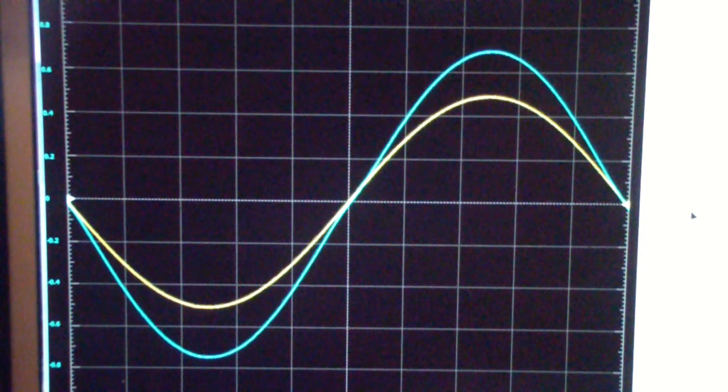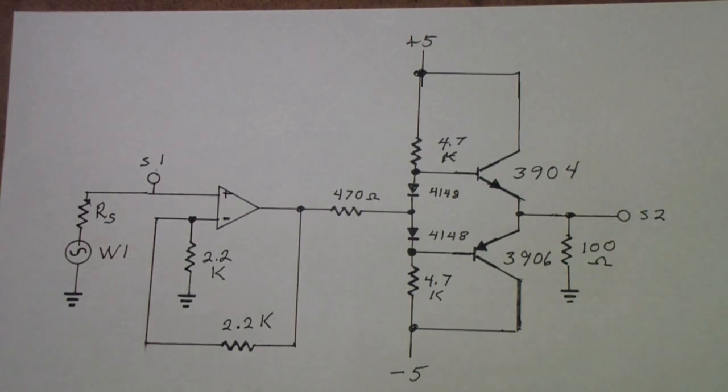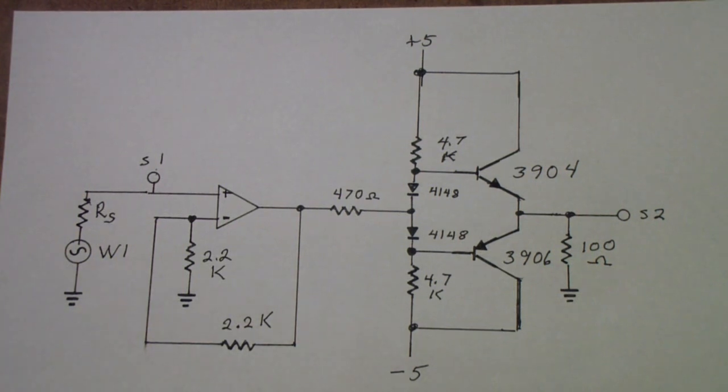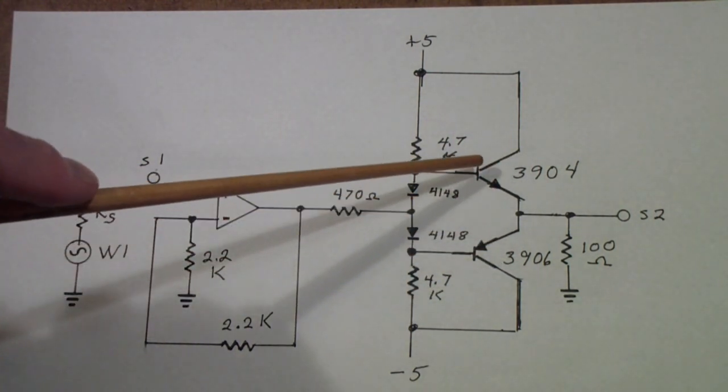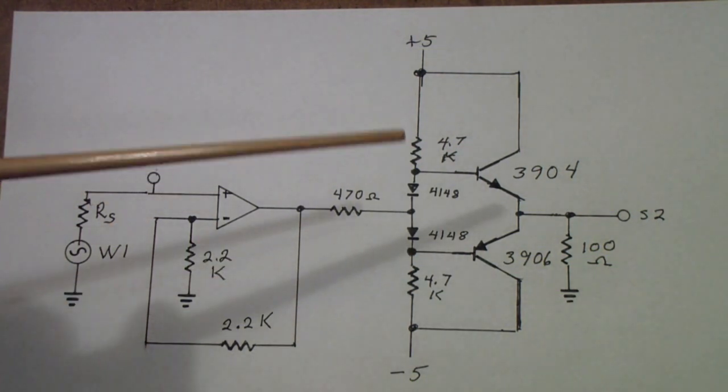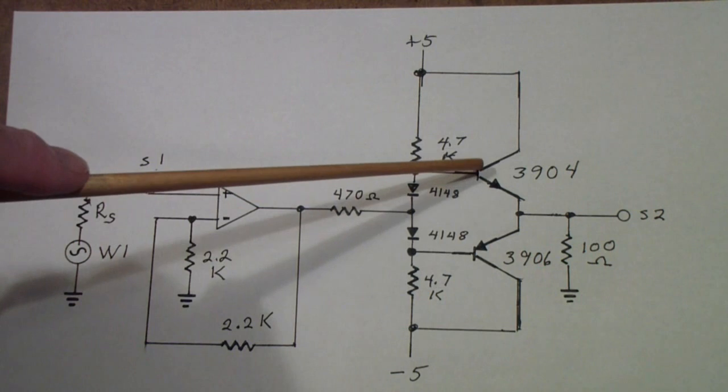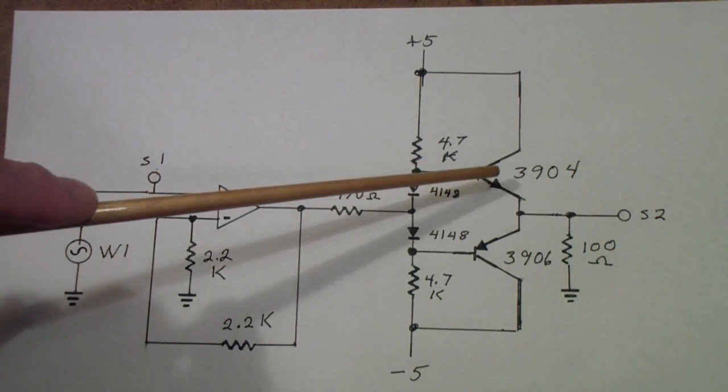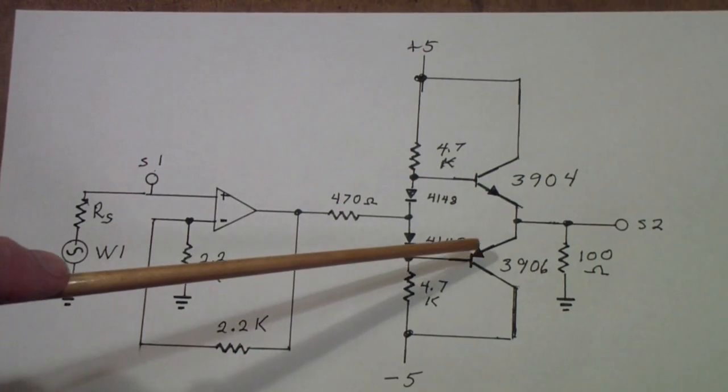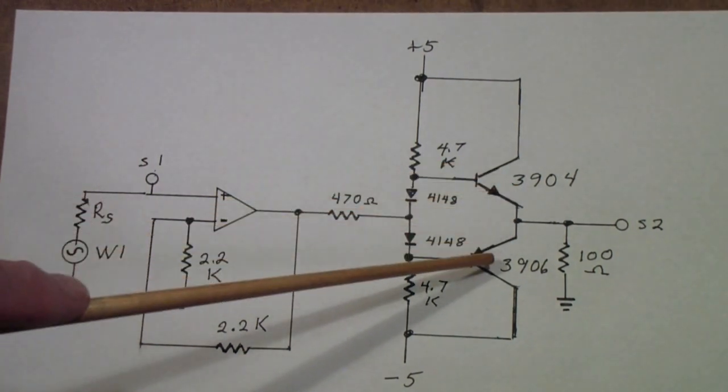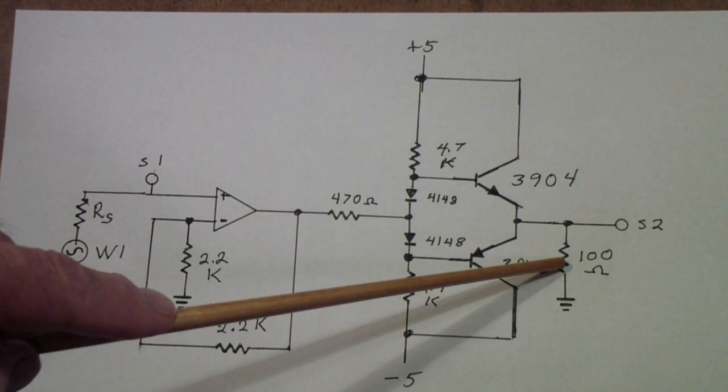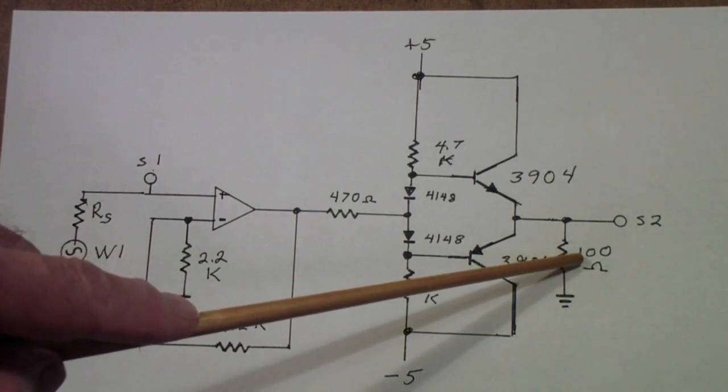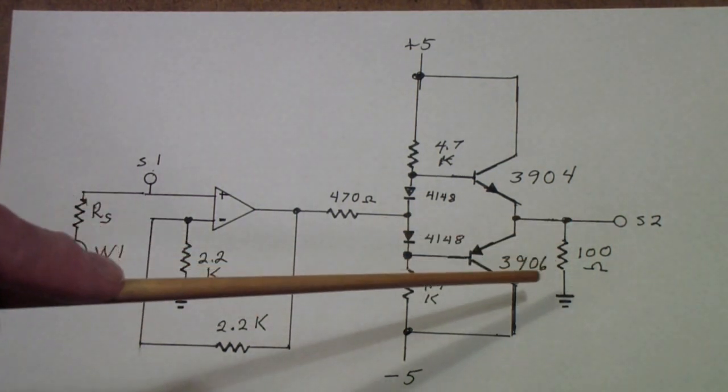Here is the circuit that we'll look at on the breadboard. This is a fairly typical complementary symmetry output stage for a solid-state amplifier. It's called complementary because you may notice that this transistor is an NPN transistor, this one is a PNP. The emitters are connected together so each of them operates as an emitter follower into this 100 ohm load.